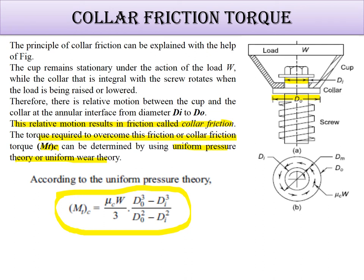This gives the collar friction torque using uniform pressure theory. Using wear theory, the equation is: μc W / 4 × (Do + Di). These equations are helpful for calculating the torque based on uniform pressure theory and uniform wear theory.